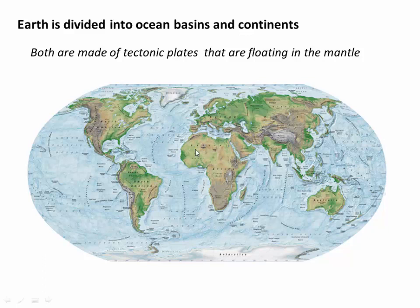The answer is that both continents and ocean basins are made of tectonic plates that are essentially floating in Earth's mantle. This is very analogous to how an iceberg might float in the ocean — you may see the tip of the iceberg just above the surface, but it masks a much larger body of ice, or in this case rock, floating below the surface. So if everything's made of rock, why are continents floating so much higher than the ocean basins?